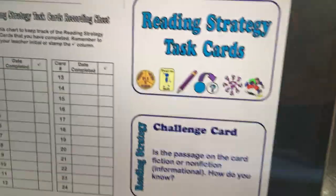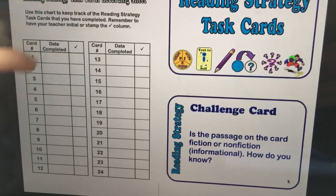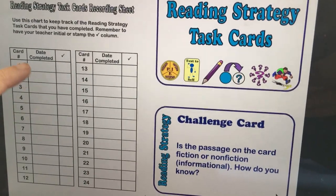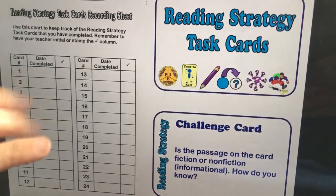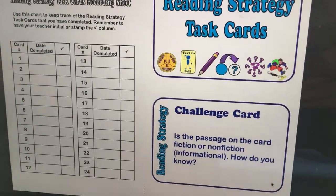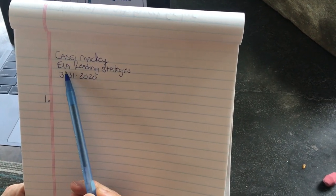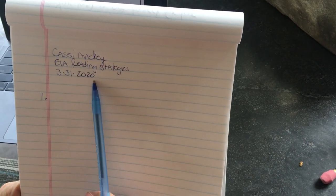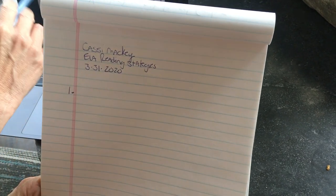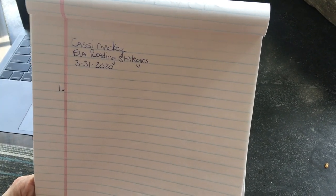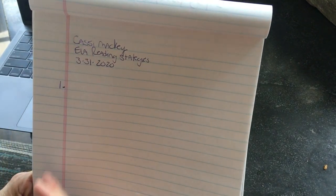They show you a Reading Strategy Task Card recording sheet, but I don't want you using that because it doesn't give you enough space. Use a piece of paper instead — Pete's going to show you my piece of paper. You'll put your first name, last name, that you're doing ELA Reading Strategies, the date, and then number them starting at one and keep going until you've answered all 24.